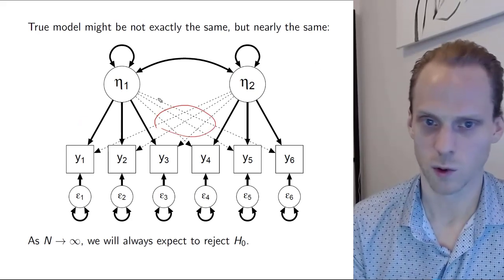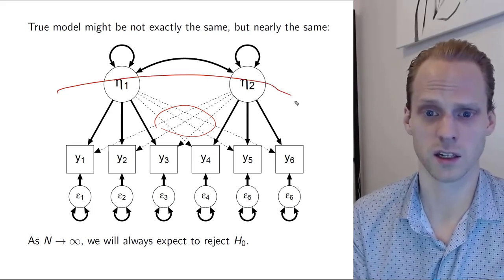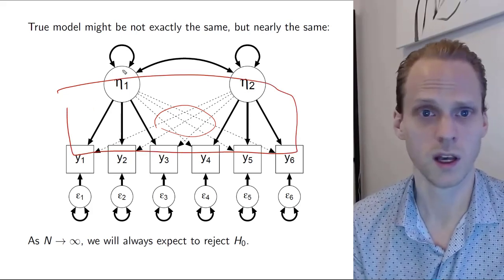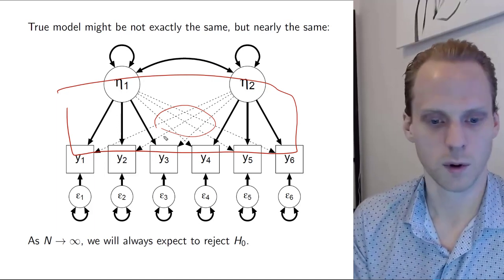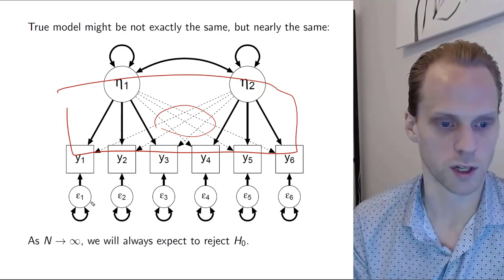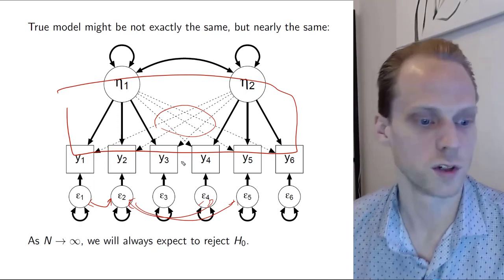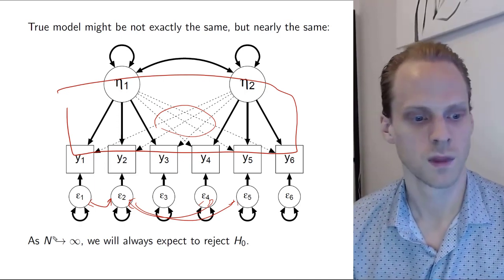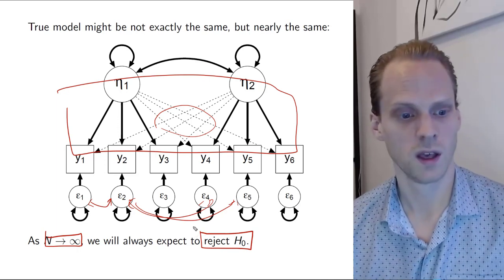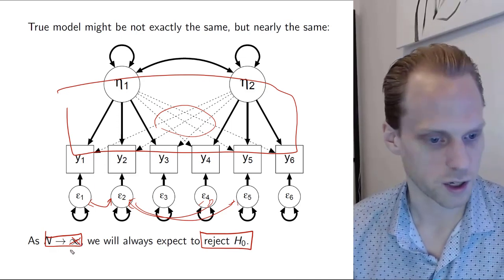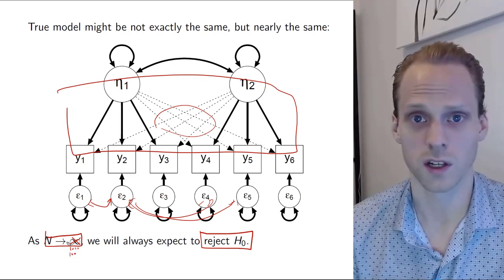The true model might not be exactly the same but might be nearly the same. Maybe there are very small effects, other things, non-linear effects. Reality is probably much more complicated than this simple model with three factor loadings and one normally distributed variable per item. This is the argument we make in the network literature as well. Probably the real world is more complicated. We probably don't have local independence, so we expect all kinds of stuff happening. You should expect chi-square will be significant. As n goes to infinity, we should expect to reject the hypothesis and get significant chi-square. Infinity here is not that high, maybe a thousand or even a hundred.